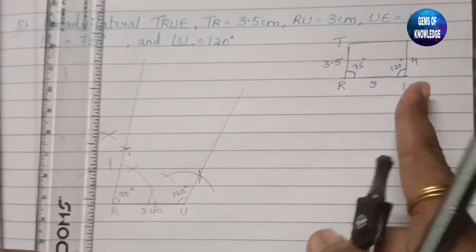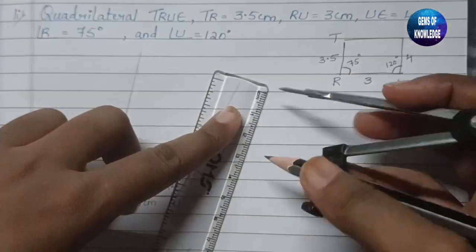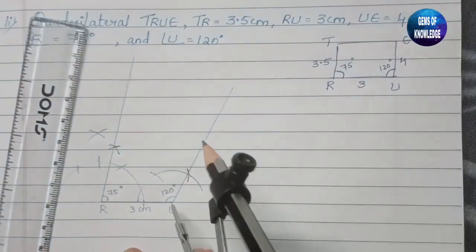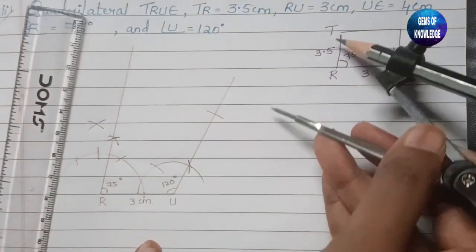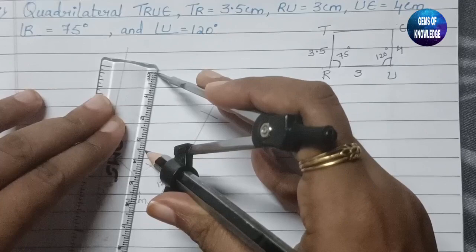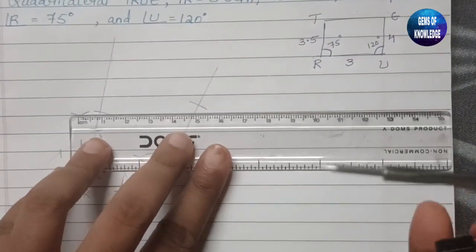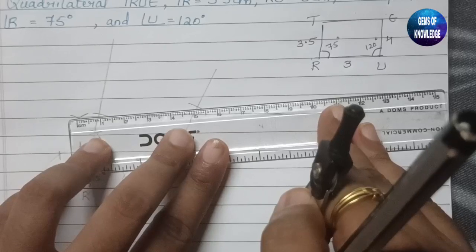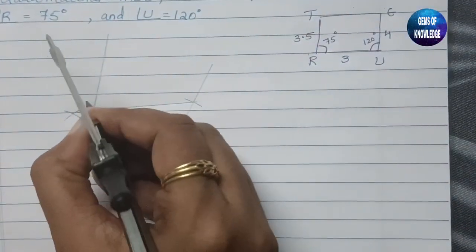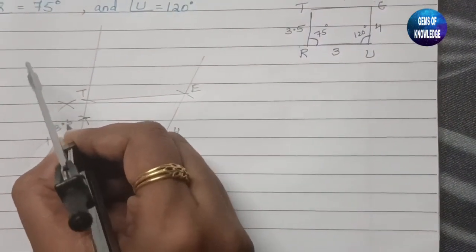Now, along the 120° line from U, measure 4 cm to mark point E. Along the 75° line from R, measure 3.5 cm to mark point T. Join T and E to complete the quadrilateral TRUE. Point T is where the 3.5 cm measurement ends, and point E is where the 4 cm measurement ends.